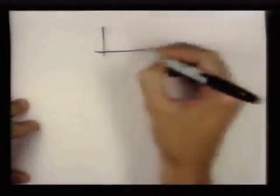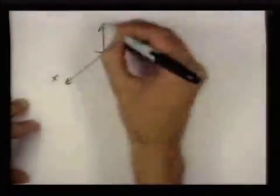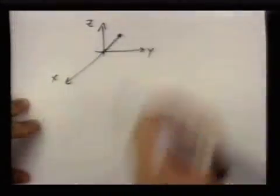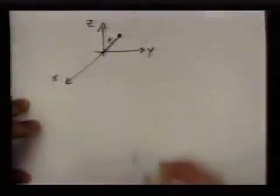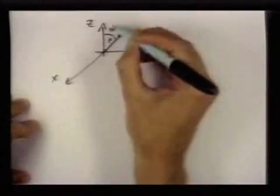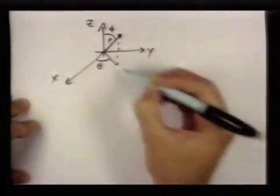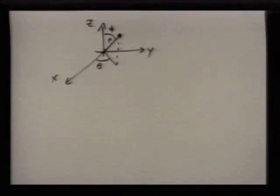Now let me mention the formulas for going from spherical coordinates to XYZ coordinates. Looking at the picture again: in spherical coordinates, rho is the distance from the origin, phi is the angle from the z-axis, and theta is the angle down in the xy-plane. I want to express x, y, and z in terms of rho, phi, and theta.